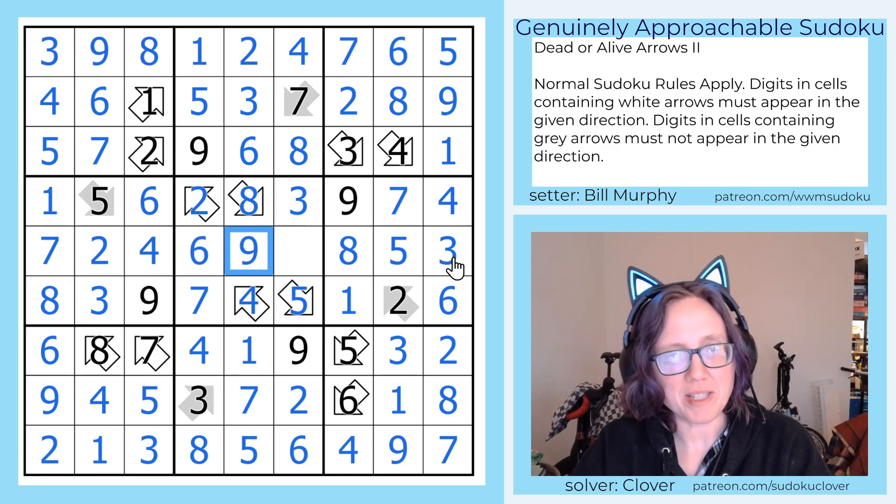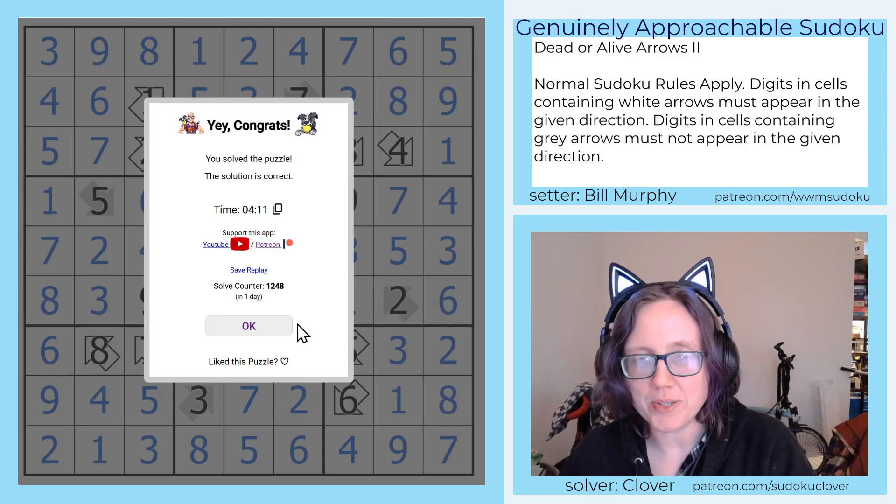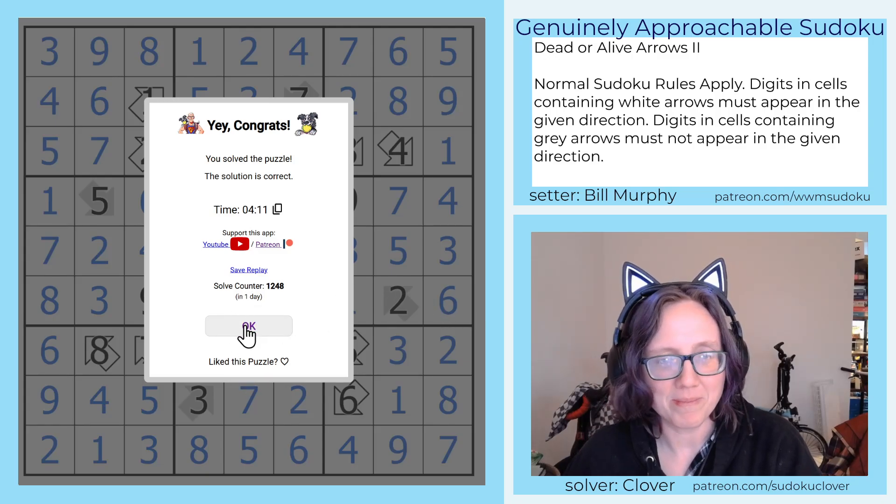And to finish off the grid, we placed the last three digits in the center region. And that is how you solve Bill Murphy's Dead or Alive Arrows 2. I really enjoyed that one.